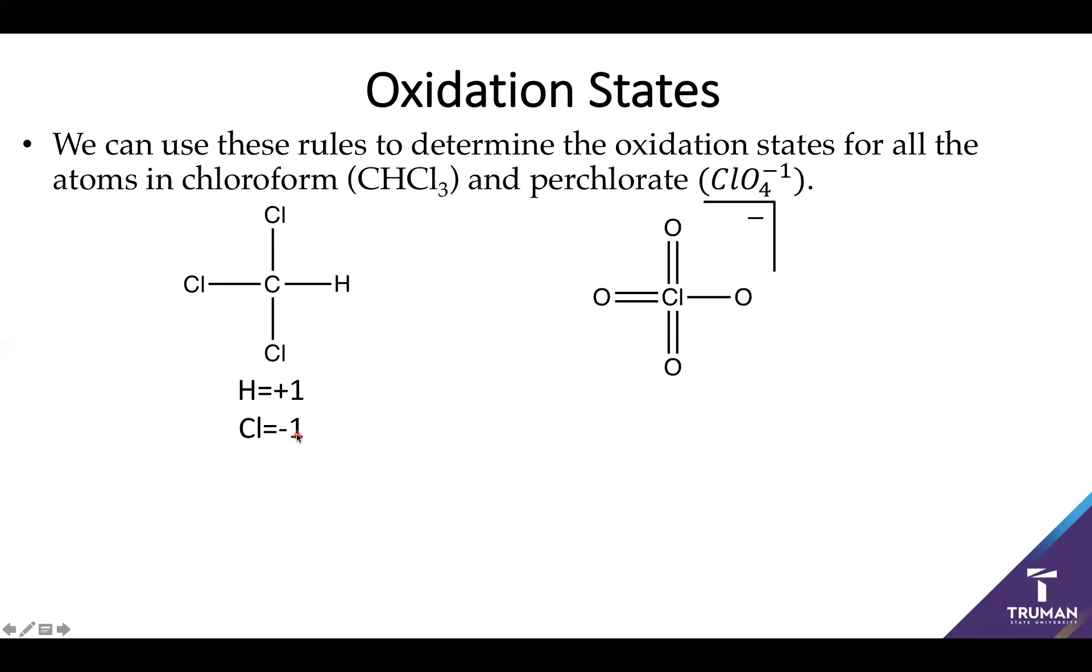So that's most of the molecule solved. All I have now is to figure out carbon. Well, here I can use the fact that the total is zero. And the total is also going to be the equal to the sum of all the other oxidation states. So this is going to be the sum of carbon plus three times chloride because the chloride shows up three times plus the hydrogen.